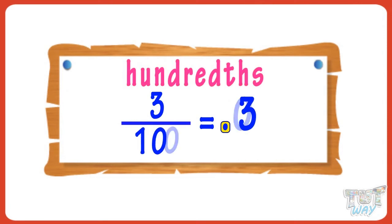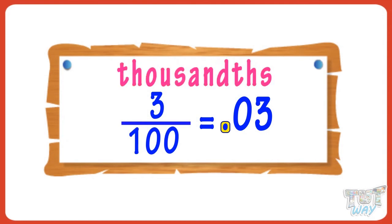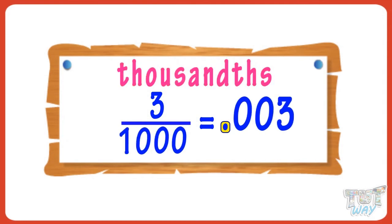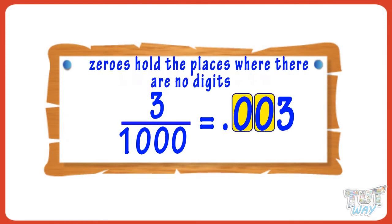If it's hundredths, we place decimal at 2 digits from left. And if it's thousandths, we place decimal after 3 digits from left. And zeros hold the places where there are no digits.